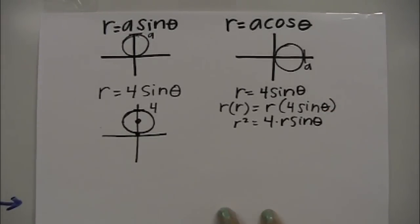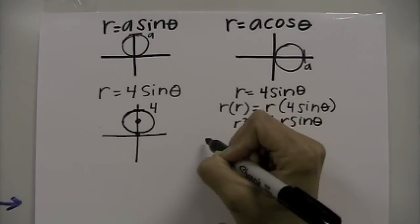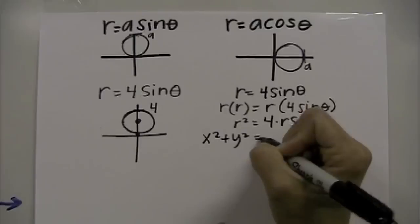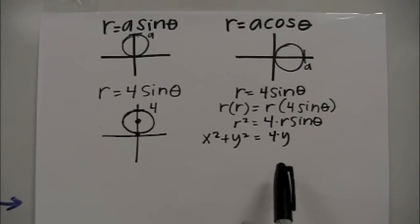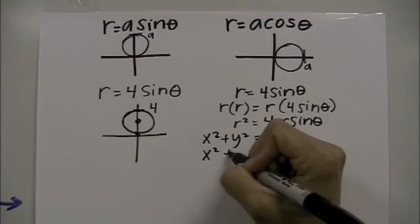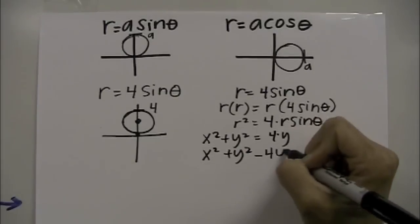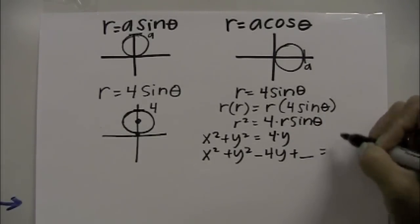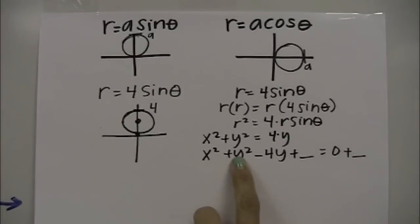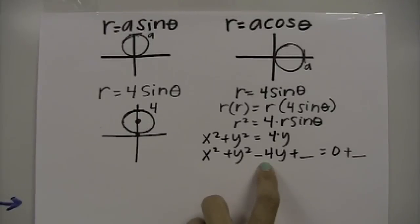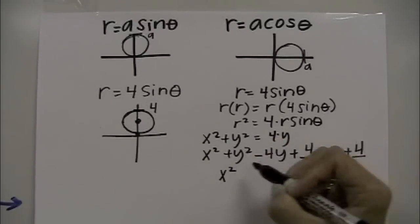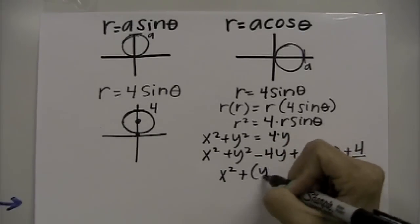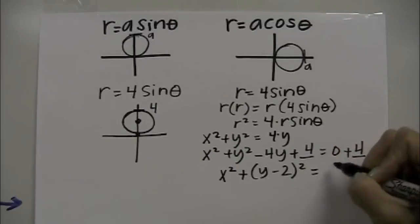Using our conversion equations, we substitute r² with x²+y². On the right side, r·sine(θ) can be substituted with y, giving x²+y²=4y. I'm going to complete the square: bring the 4y over, leaving 0 on the right side. We take b, divide by 2 and square it — negative 4 divided by 2 is negative 2, squared is 4 — so we add 4 to both sides.